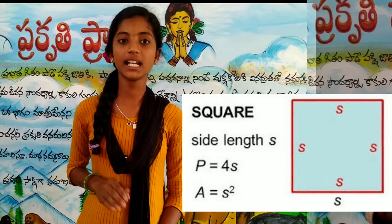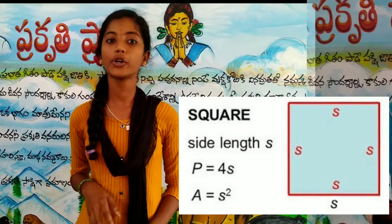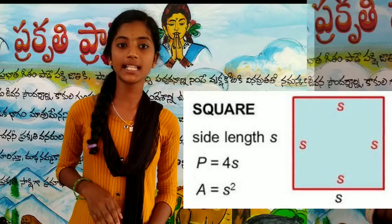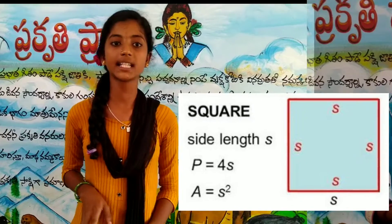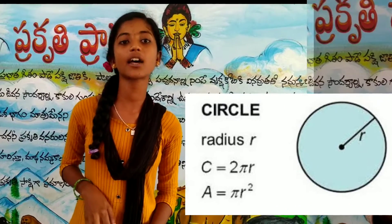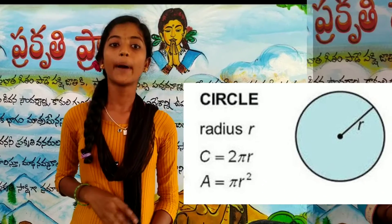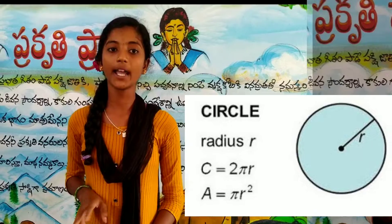Square perimeter is equal to 4S. Square area is equal to S square.